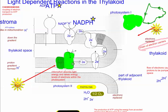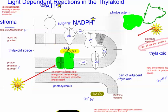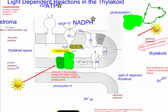As a result of all of this, electrons get excited. But we're going to run out of electrons eventually, so we need to replace them. It turns out that water is a good source of electrons, hydrogen, and oxygen — though oxygen is kind of a waste product. Water is going to be split by an enzyme called the water-splitting enzyme, and oxygen comes off as a waste product.